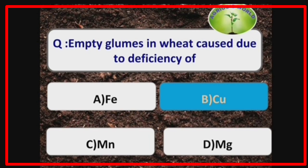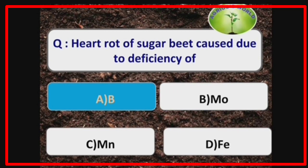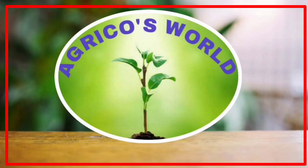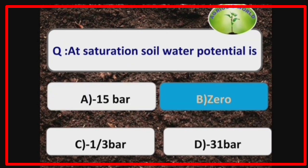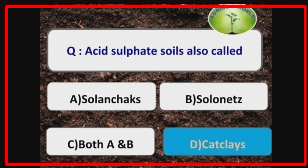Empty glumes in wheat are caused due to the deficiency of copper. Heart rot of sugar beet is caused due to the deficiency of boron. At saturation, soil water potential is zero.